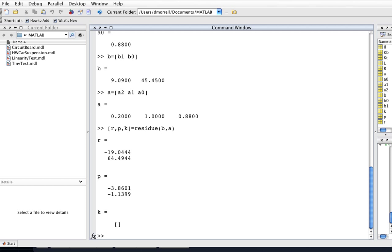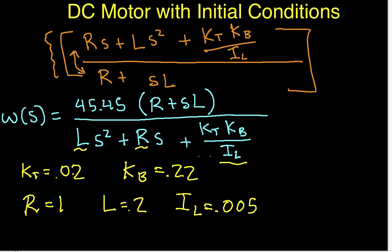With that partial fraction expansion, we have the values where R1 and 2 are given by minus 19 and 64.49. The two poles, the P, is given by minus 3.86 and minus 1.13. So, we can now, as soon as I, again, I'll pause this so you don't have to watch me desperately try to write this down. Okay, so we've got our partial fraction expansion here.